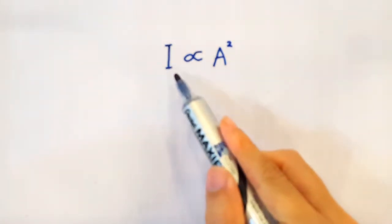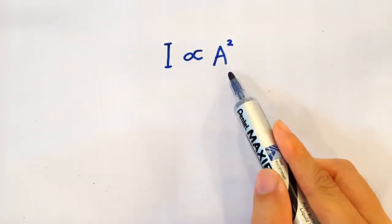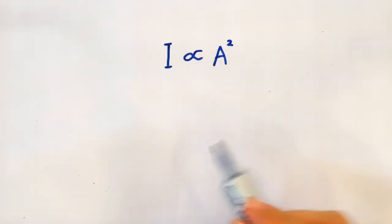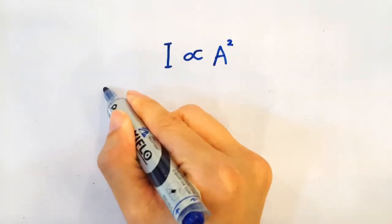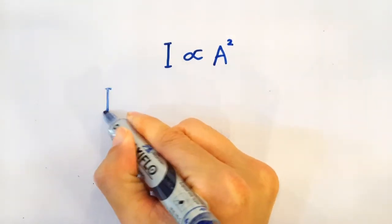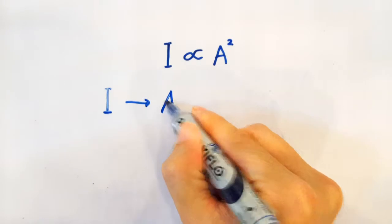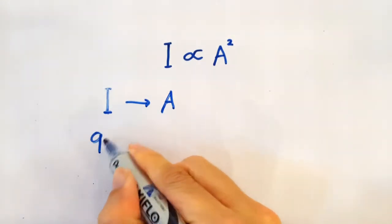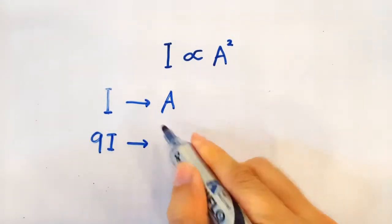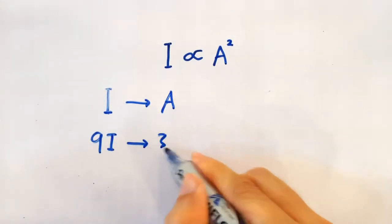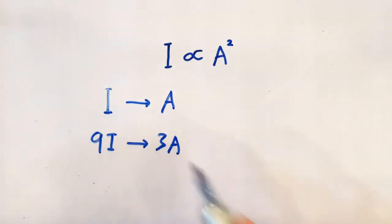The intensity of a wave is proportional to the amplitude squared. So if a wave with an intensity of i has amplitude a, then a wave with intensity 9i would have amplitude of 3a — square root of 9 is 3.